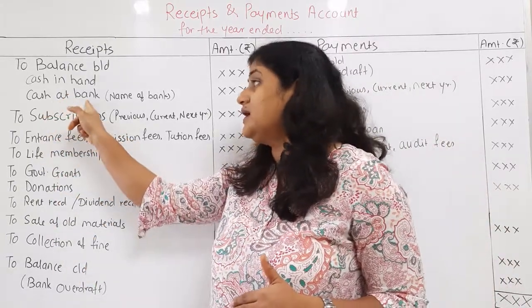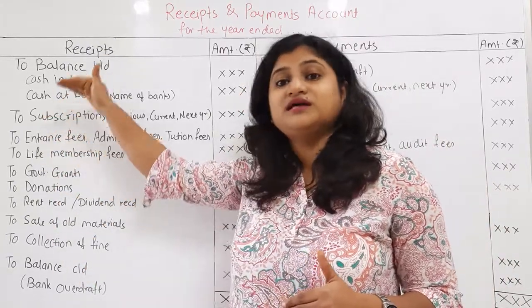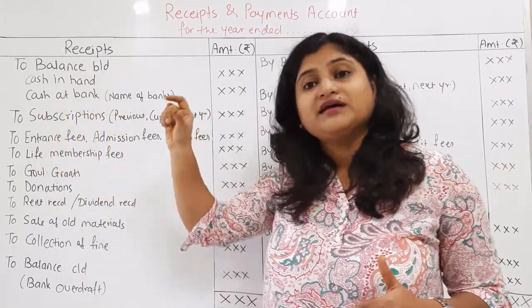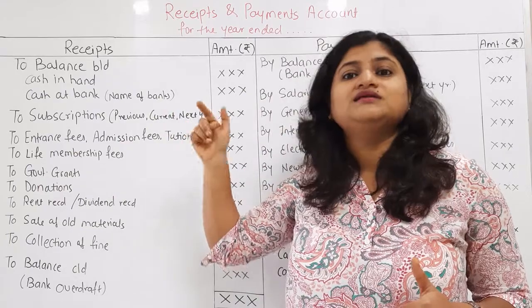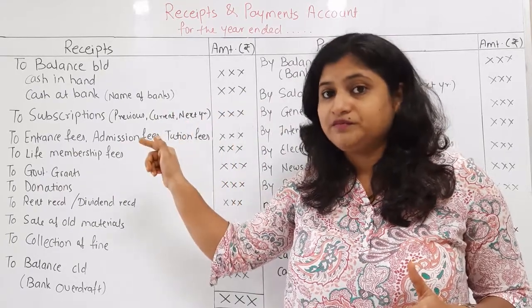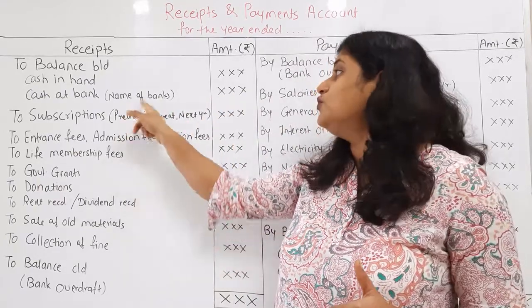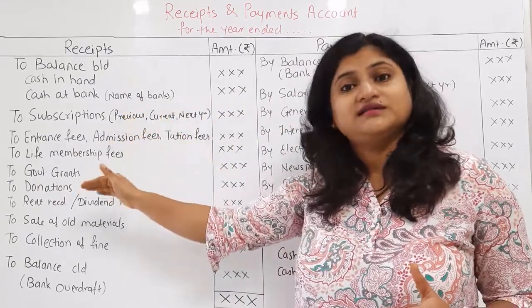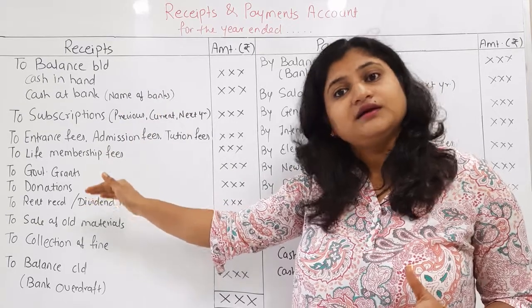This is the cash at the bank — the bank's balance at the end of the year. This will be mentioned the same way. Clear?